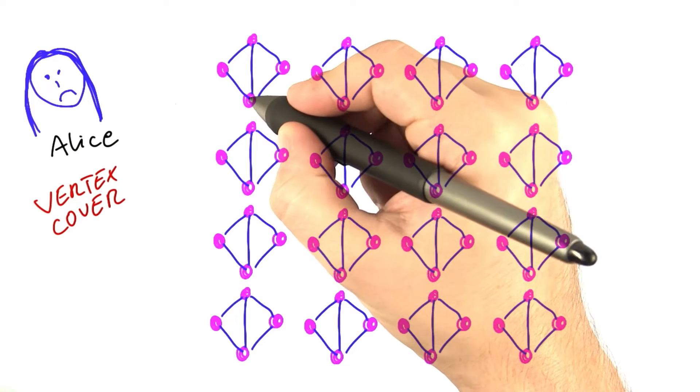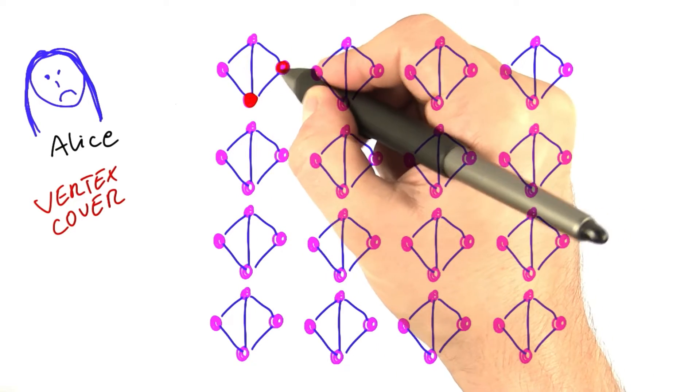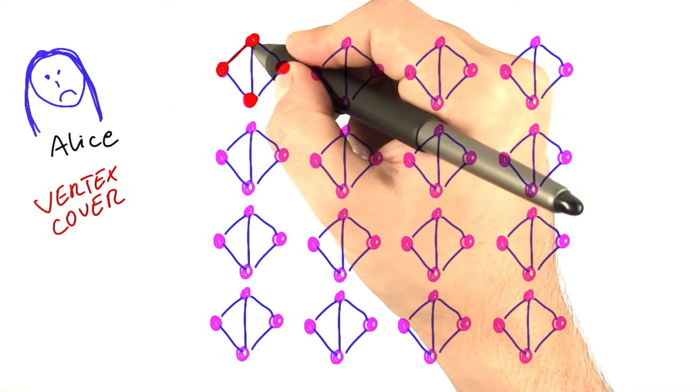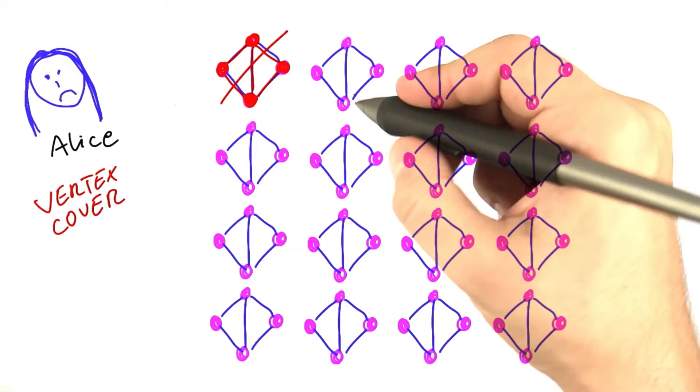Her algorithm starts out, for example, by saying, let's put no vertices into the VertexCover. And of course, this leaves all edges uncovered. So, it's not even a valid solution.